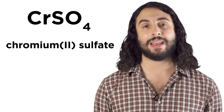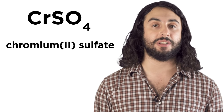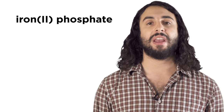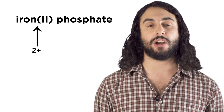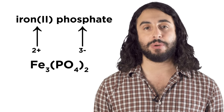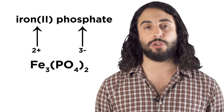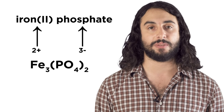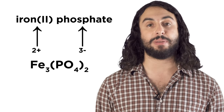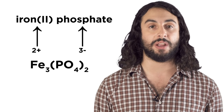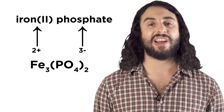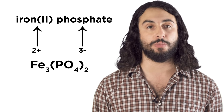We can also go from a name to a formula unit. If we have the name iron(II) phosphate, we know that we have iron atoms that are two-plus and phosphates that are three-minus, so we will need three irons and two phosphates to make a neutral compound. The oxidation state of the iron atom is implied by the ratio in the formula unit, but it is not implied in the written name — that's why we specify with the Roman numeral.